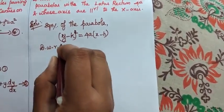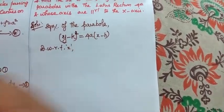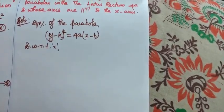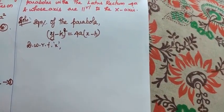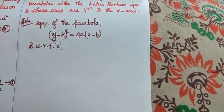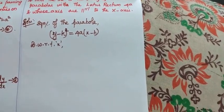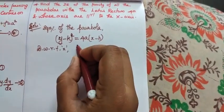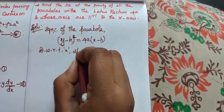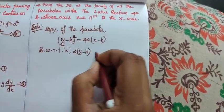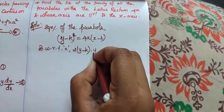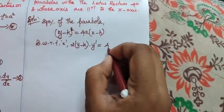Already in 11th standard we have seen that if y squared, y dash can be written as dy by dx. For our convenience, if you want you can take it as dash or you can take dy by dx. No problem in that. So 2(y - k) dy/dx, I can write as y dash, which is equal to 4a.